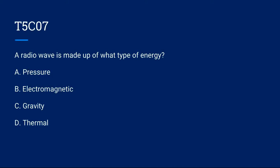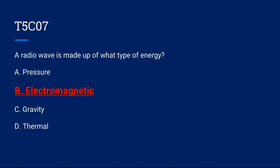T5C07: A radio wave is made up of what type of energy? A. Pressure, B. Electromagnetic, C. Gravity, or D. Thermal. Correct answer is B. Electromagnetic.